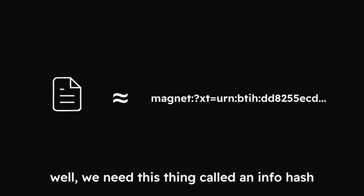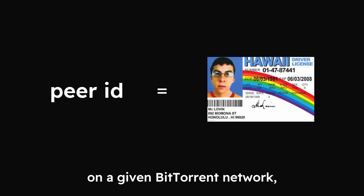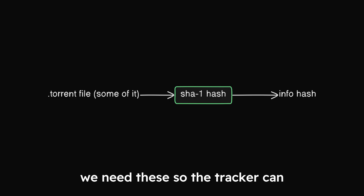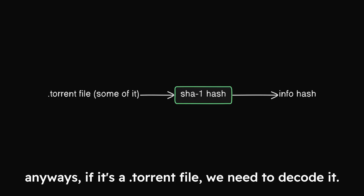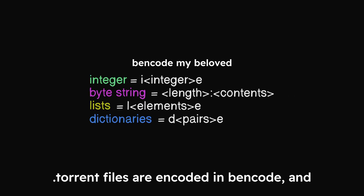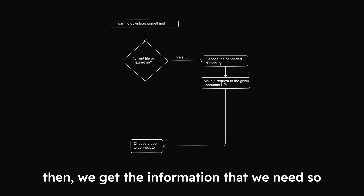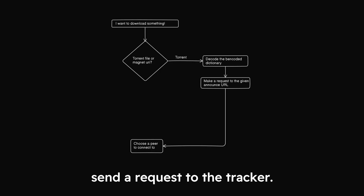We need this thing called an info hash and our peer ID. The peer ID is just our client's ID on a given BitTorrent network, and the info hash is a SHA-1 hash of a part of the .torrent file. We need these so the tracker can identify what list of peers to return. If it's a .torrent file, we need to decode it — .torrent files are encoded in Bencode, which is just a method of encoding. Then we get the information we need so we can calculate the info hash and send a request to the tracker.